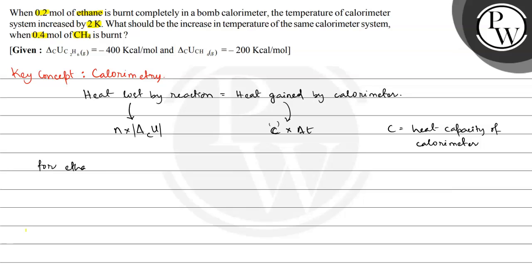So for ethane, number of moles of ethane is 0.2. So 0.2 multiplied by...